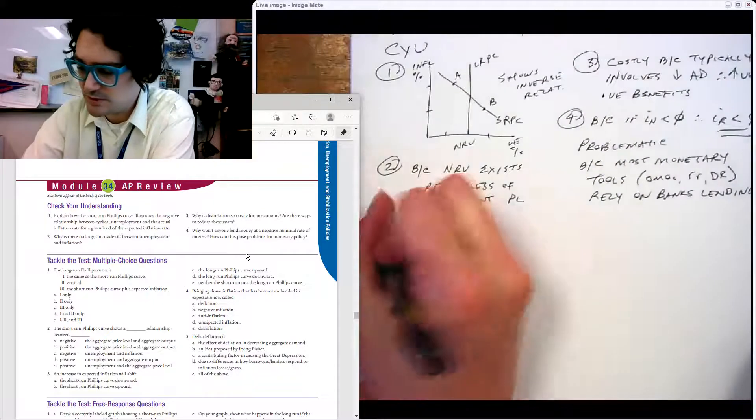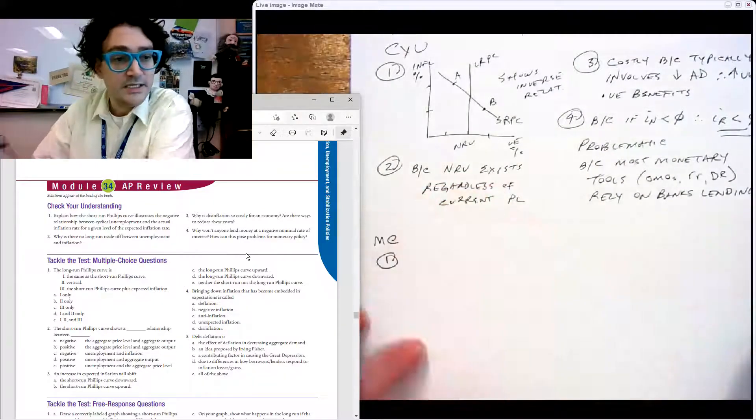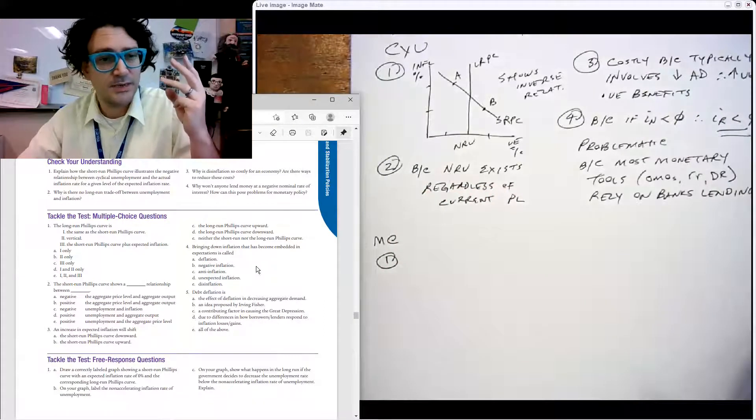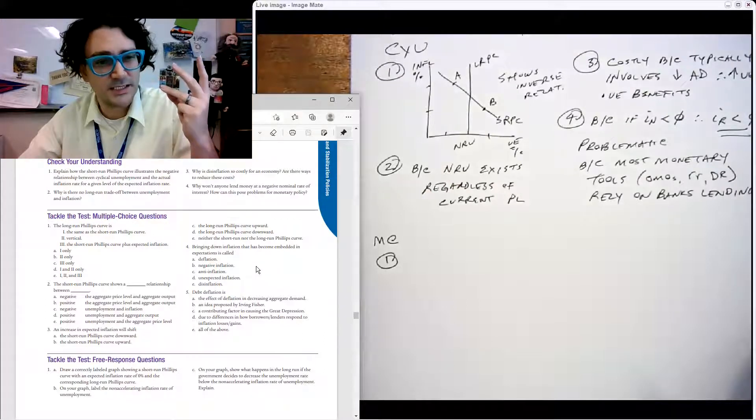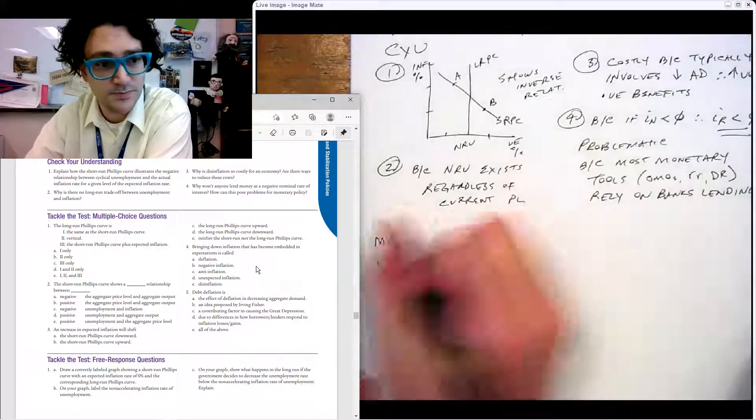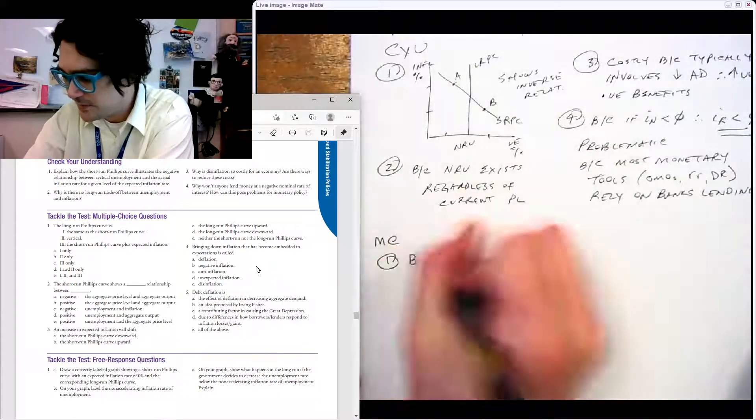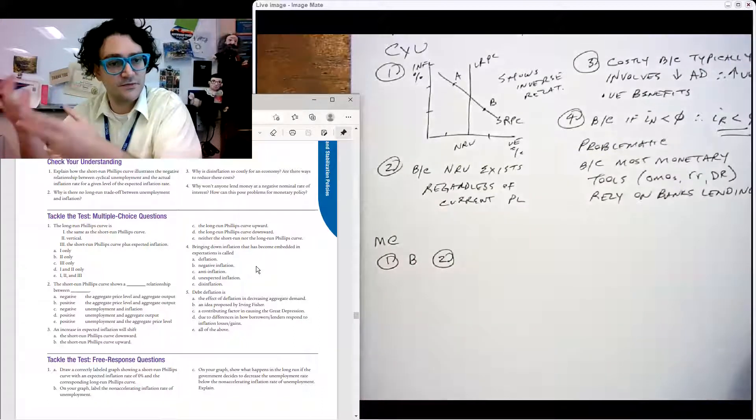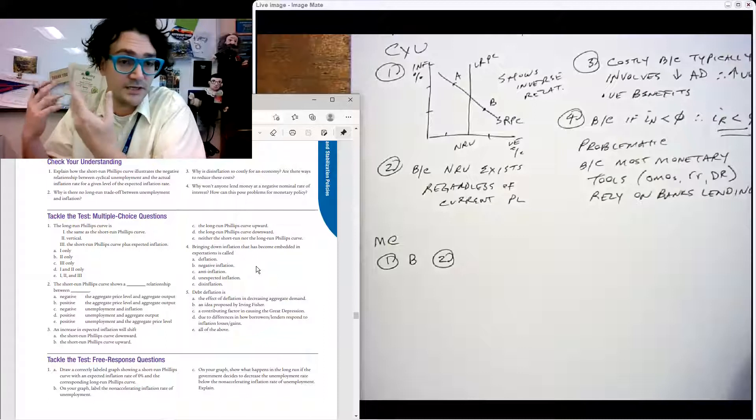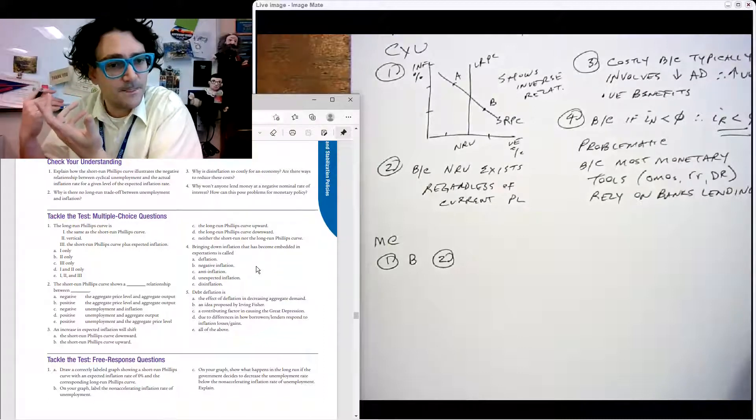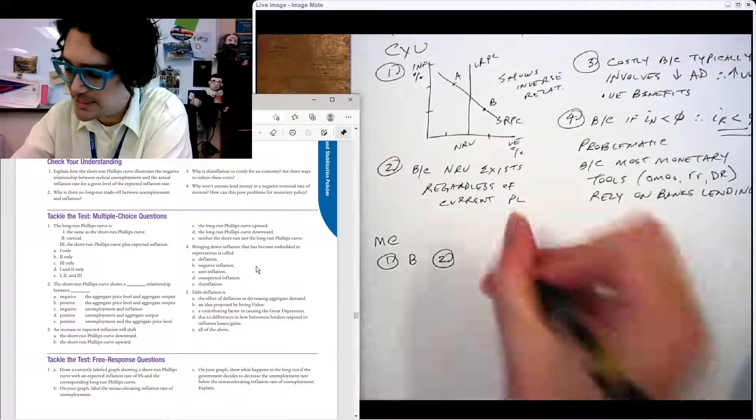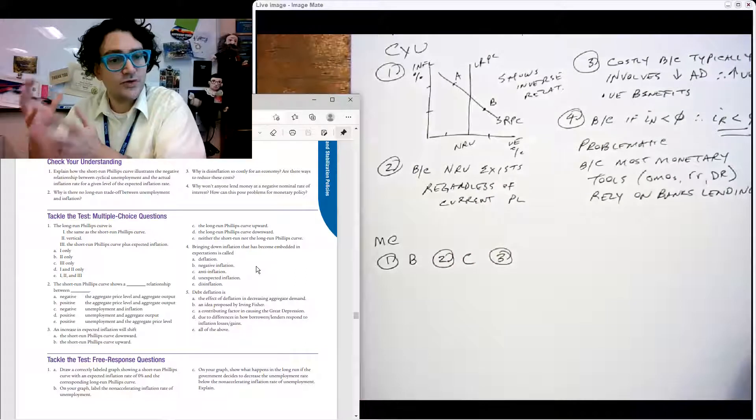Let's take a look at these multiple choice questions. MC number one says the long run Phillips curve is vertical, that's B. Number two, the short run Phillips curve shows the inverse relationship between price levels or inflation and unemployment, that's C. Number three, an increase in expected inflation.